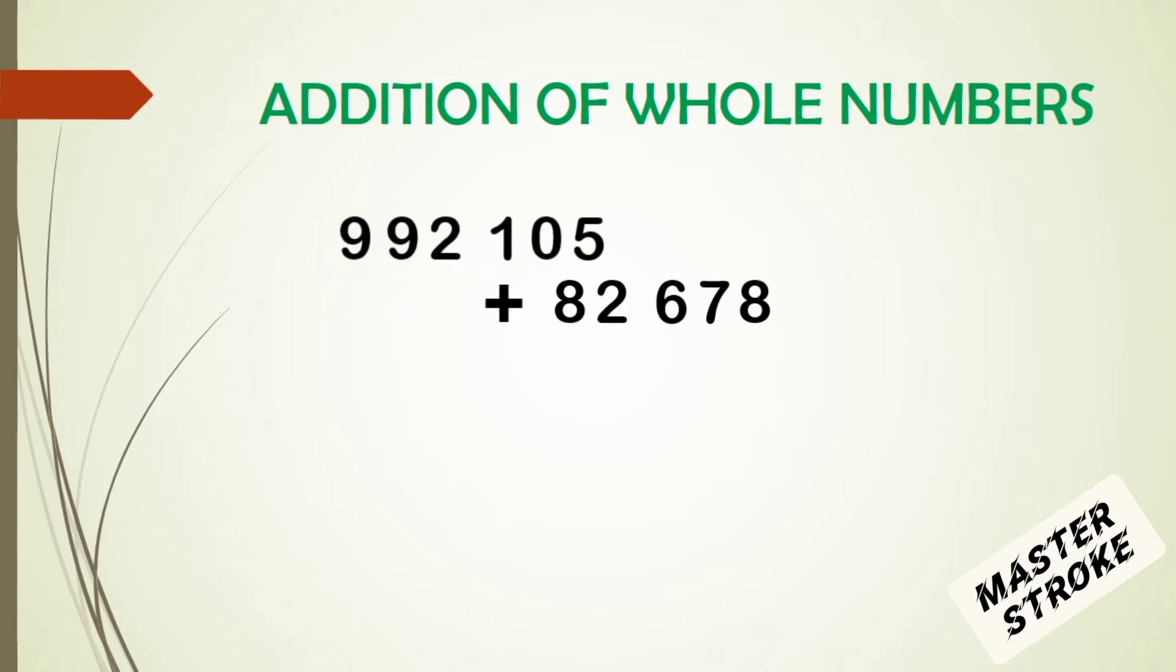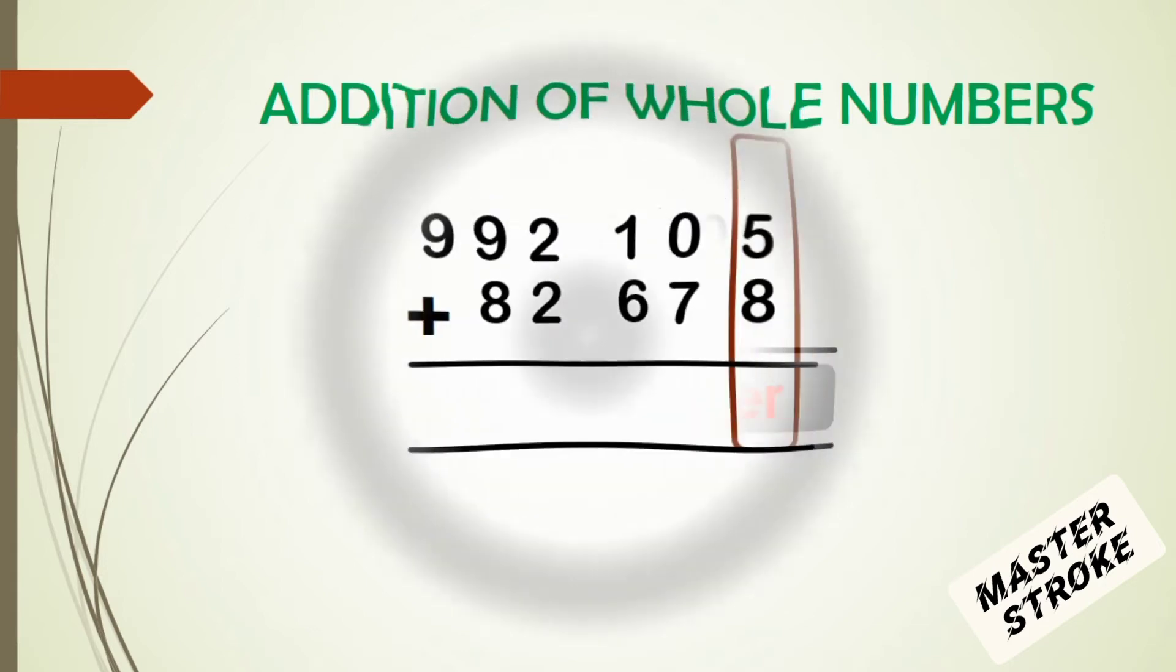To add these numbers, we first stack the numbers such that the digits in the ones place are perfectly aligned to the right. We indicate the plus sign and the equal sign at the bottom, where we will put our answer. Now, let's get to the operation.